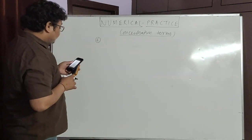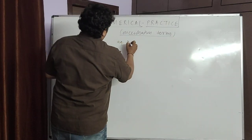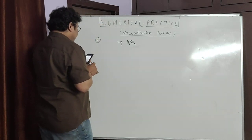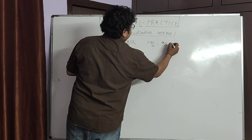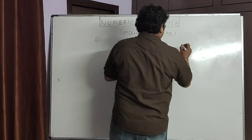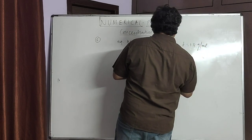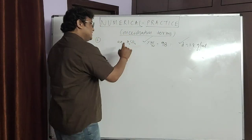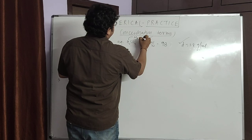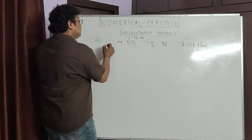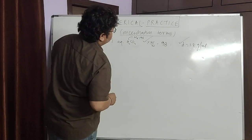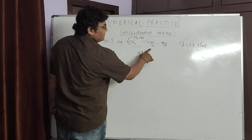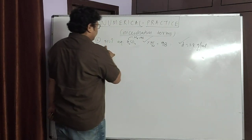Next question: calculate molarity of aqueous H₂SO₄ solution. Given: percentage by mass = 98%, density = 1.8 grams per ml, molecular mass of H₂SO₄ = 98 grams per mole. Find the molarity of the solution.